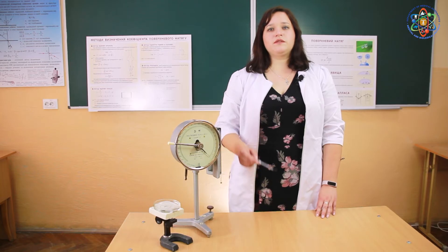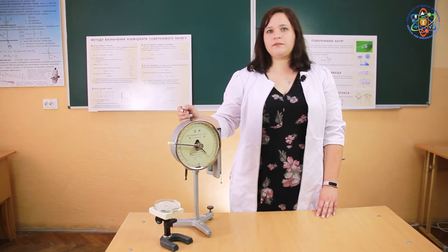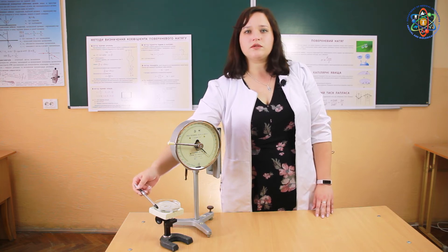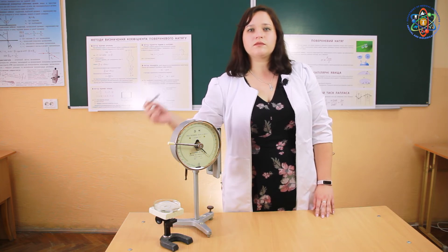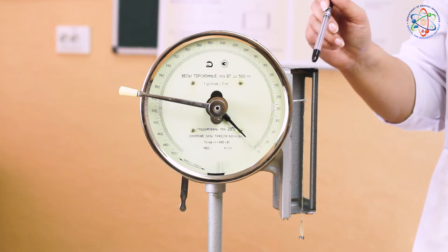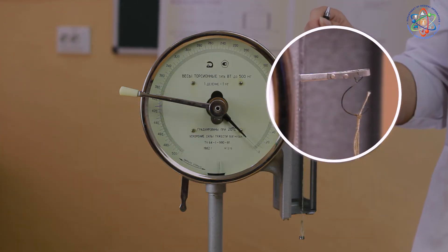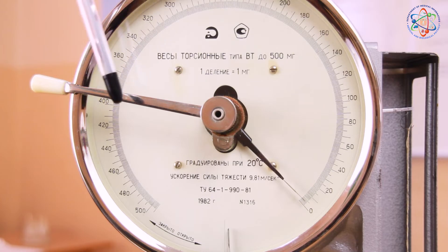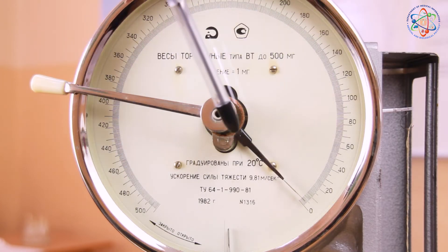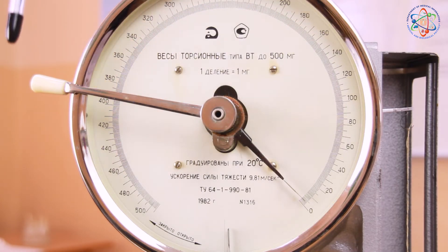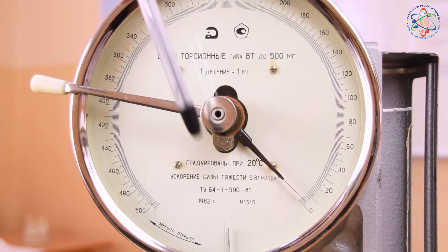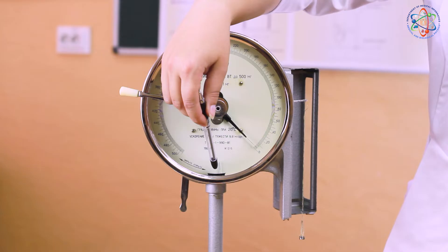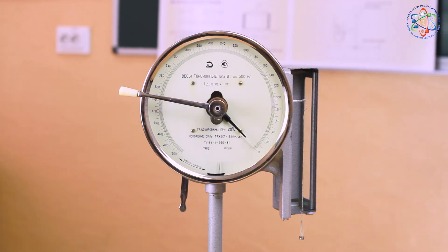In our laboratory work, we use a torsion balance, a moving platform, and a vessel with the study liquid. The device is made up of a beam with a ring attached, a dial with a scale, a starting pointer, a handle, and a reference pointer with a reference mark that identifies the equilibrium of the balance.